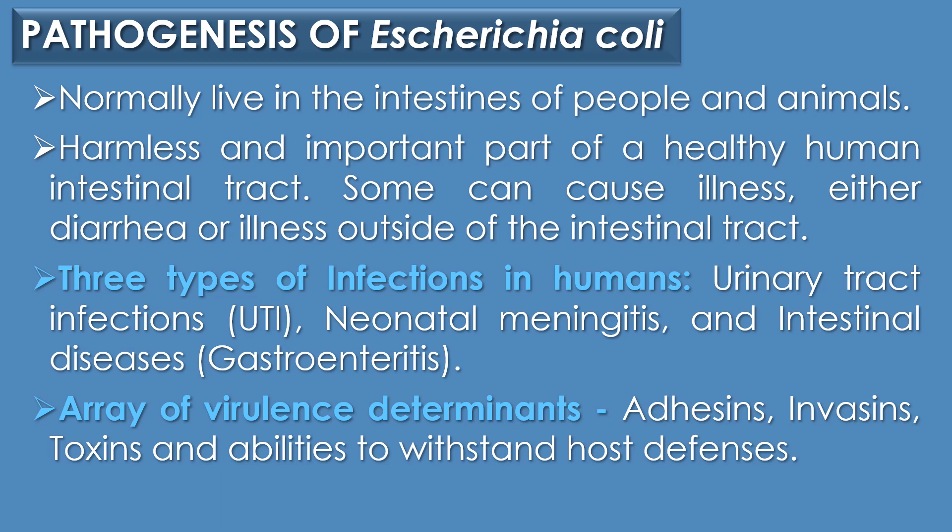Next, pathogenesis of E. coli. E. coli normally lives in the intestine of people and animals. Most E. coli are harmless and actually are an important part of the healthy human intestinal tract. However, some E. coli are pathogenic, meaning they can cause illness, either diarrhea or illness outside of the intestinal tract. Pathogenic strains of E. coli are responsible for three types of infection in humans.